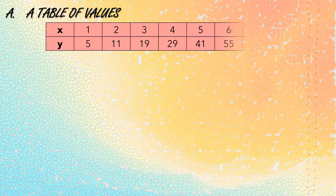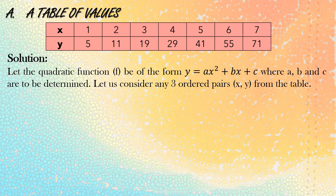First, let us determine the equation of a quadratic function if the given is a table of values. Let us consider this given table of values of x and y. We have the values of x: 1, 2, 3, 4, 5, 6, and 7. And for the y, we have 5, 11, 19, 29, 41, 55, and 71.